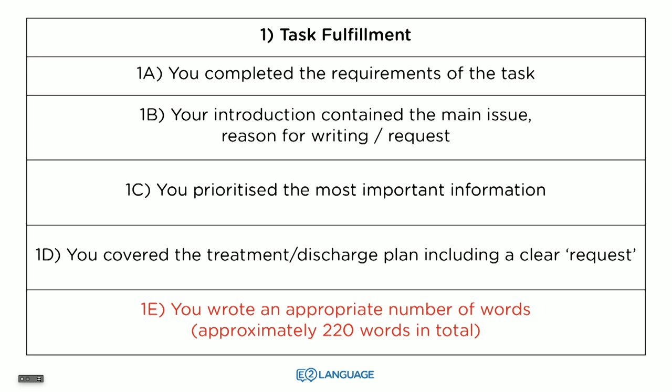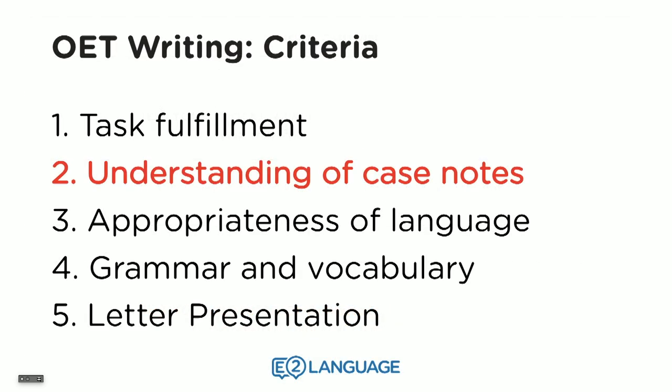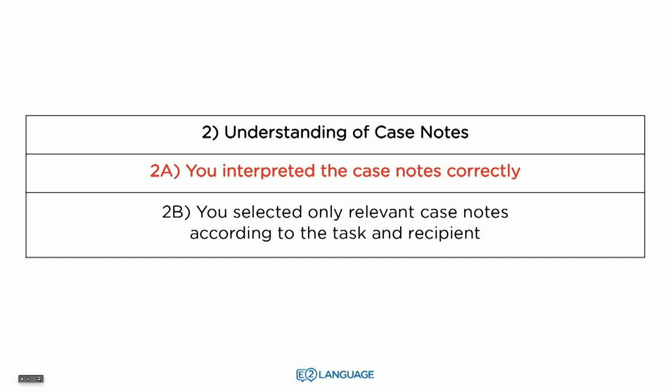These criteria for task fulfillment are the most important — they are weighted more heavily than the other criteria. The next criterion is understanding of case notes. The first part is that you interpret the case notes correctly. I had one nurse and I was correcting her writing in a tutorial. She had mistaken the word 'ambulate' for the word 'amputate' — this is a massive error. She would have lost a huge number of points for critically misinterpreting the case notes. She thought the patient needed his foot amputated; in fact, the patient had a sore foot and couldn't ambulate, so he needed a wheelie walker. This is an example of a misinterpretation of a case note.